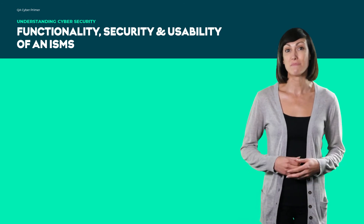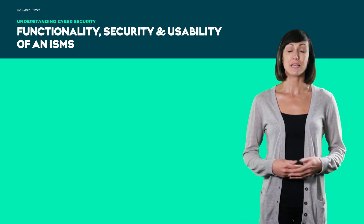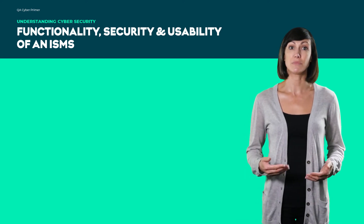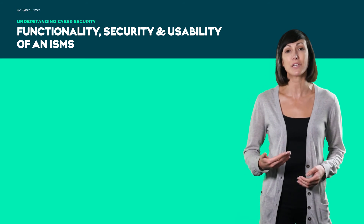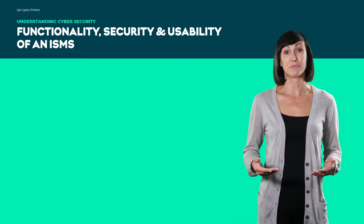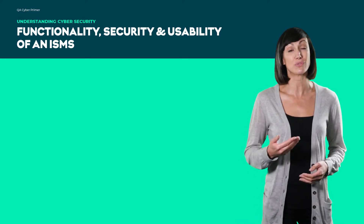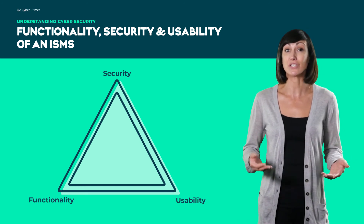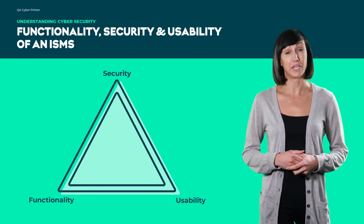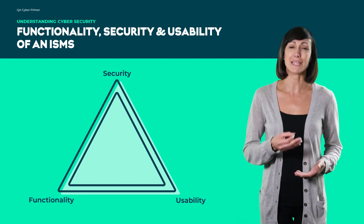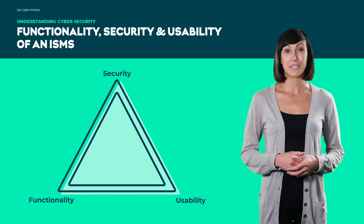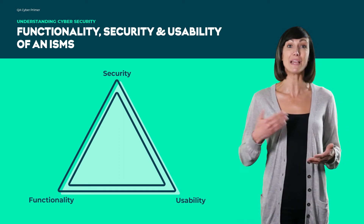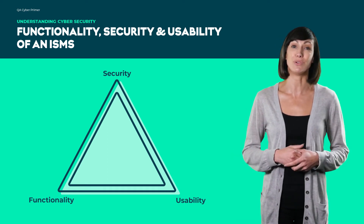Furthermore, an ISMS typically addresses employee behaviour and processes as well as data and technology. It can be targeted towards a particular type of data, such as customer data, or it can be implemented in a comprehensive way that becomes part of the company's culture. With any system, there is an inescapable and universal trade-off between security, functionality, and usability. It is simple to create a system that is totally secure by turning it off and burying it underground, but this would be at the absolute cost of usability and functionality.